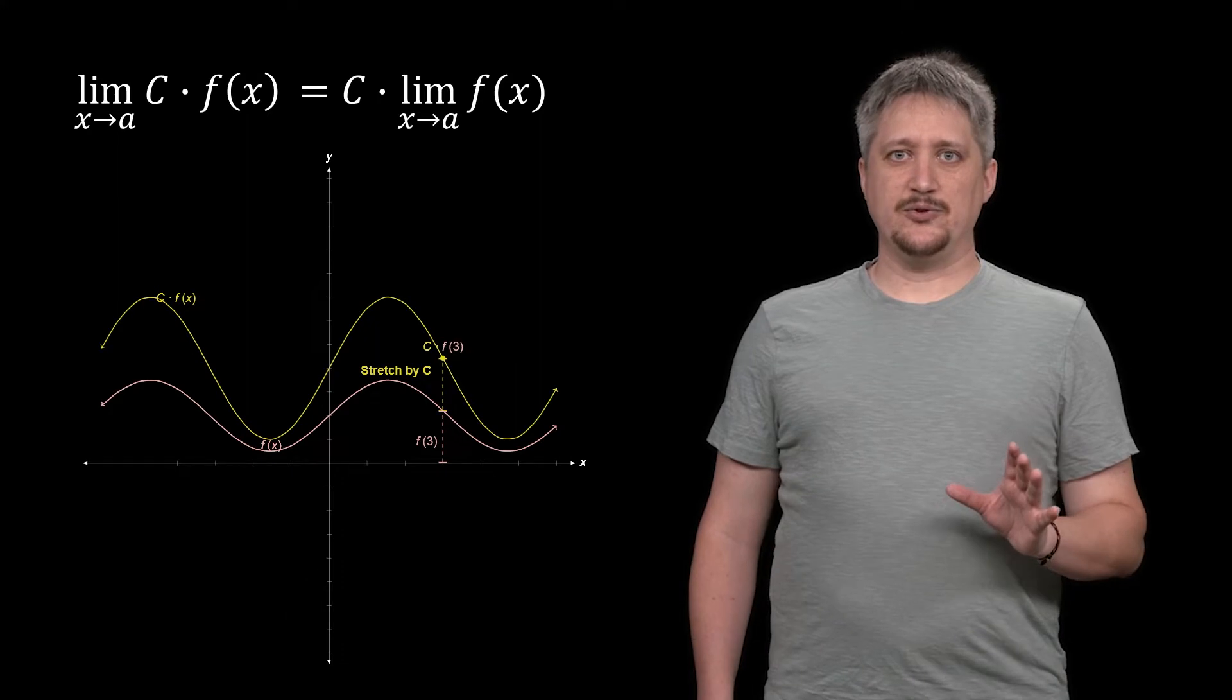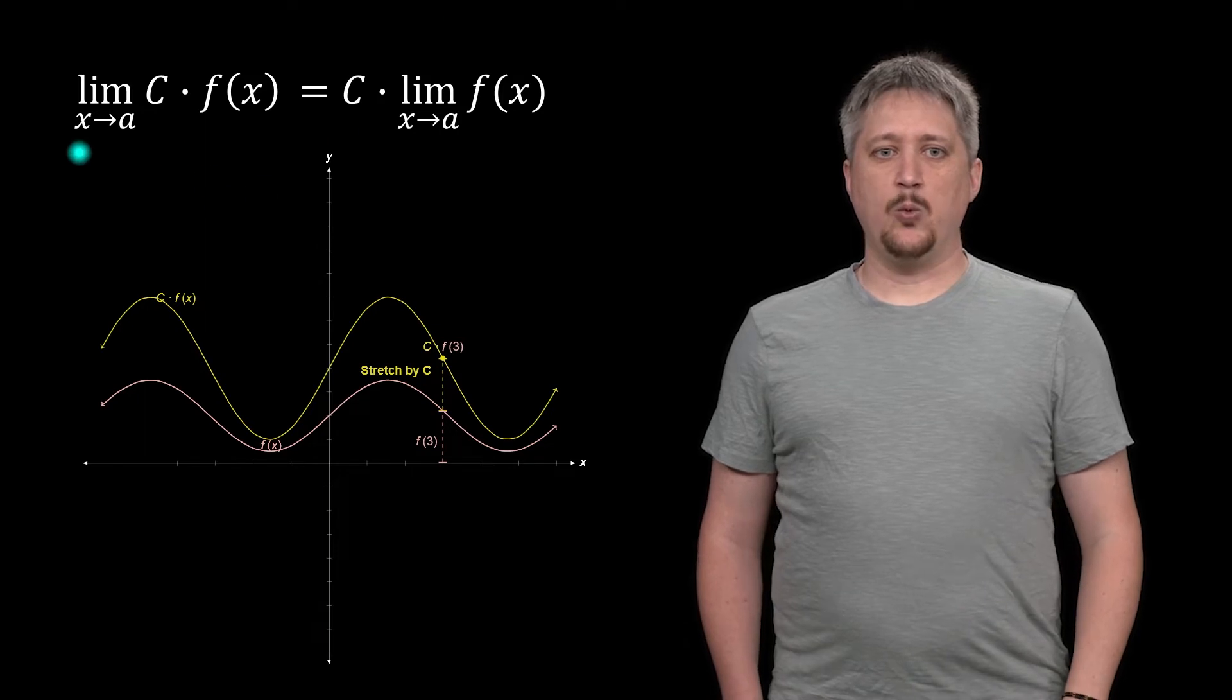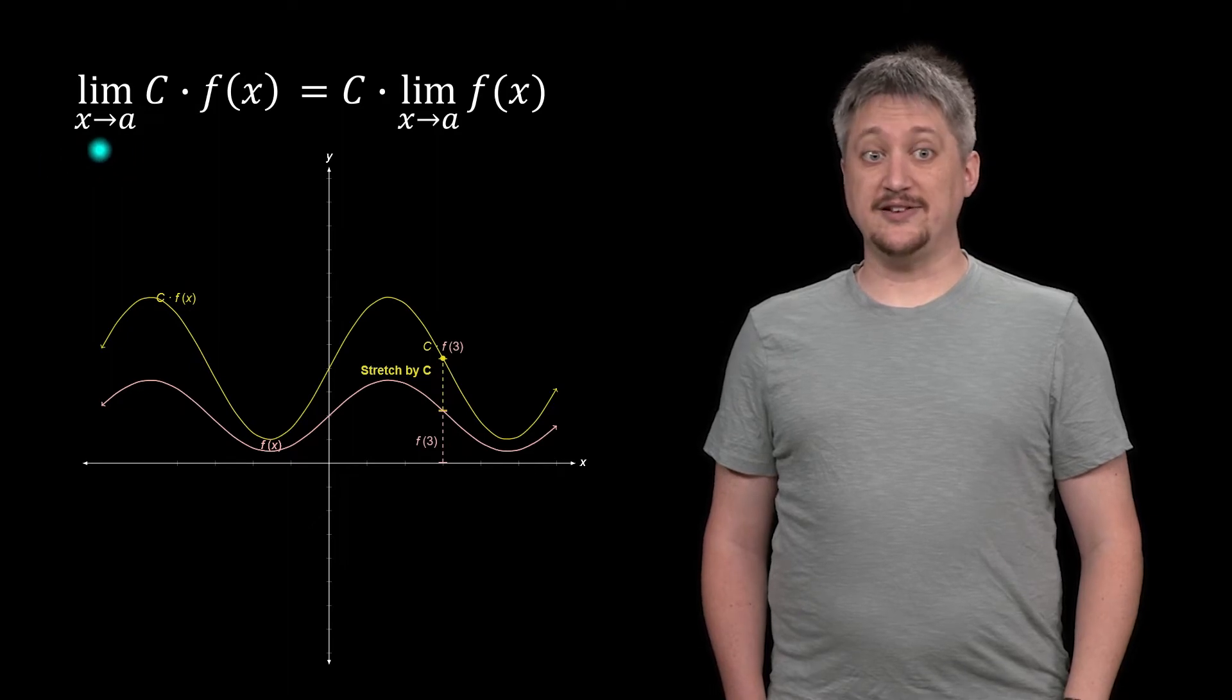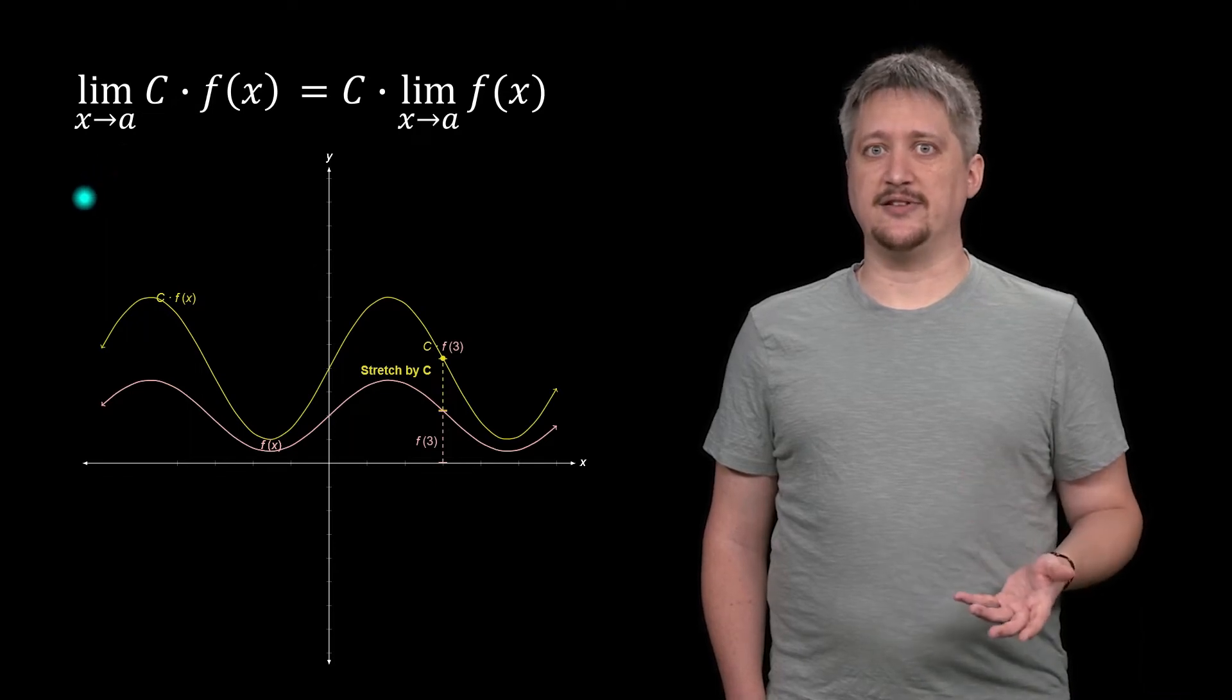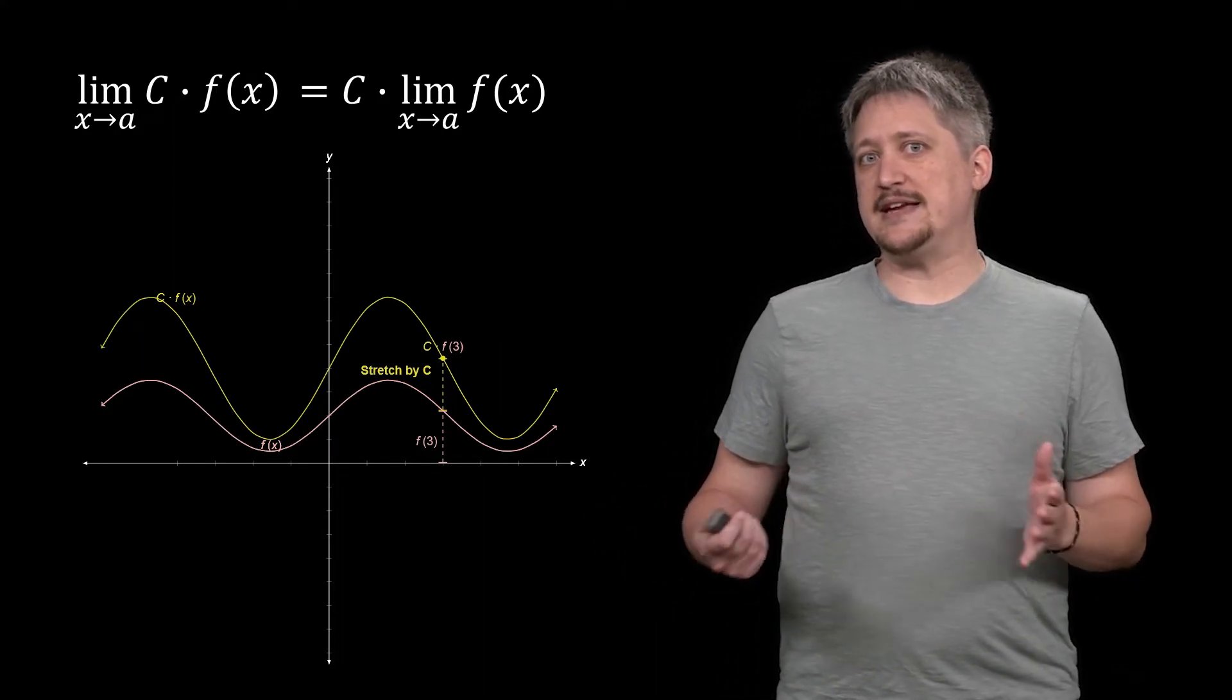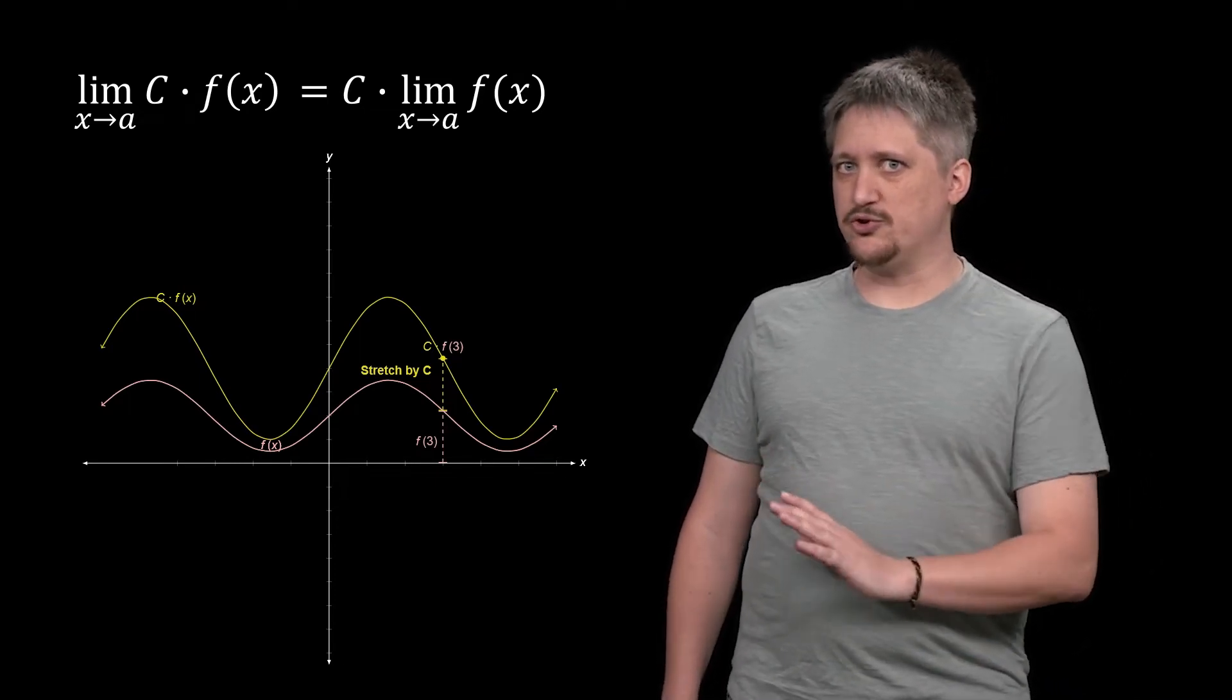As a note, I want to draw your attention to what we consider constant. It's anything that doesn't depend on the variable the limit is applying to. Here the limit is as x is approaching something, so anything that doesn't have an x in it is considered constant. We think of these as like 5, 17, pi, but as we move forward we'll see that it can be other things in some contexts. Not something we have to worry about right now, but it'll show up a little bit later.